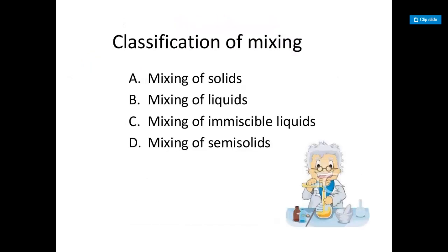Before going into the classification of mixing, I want you to know about two more terminologies. Based upon the flow properties of solids, we have two different types: cohesive materials and non-cohesive materials. Flow property means the ability of a particle, powder, or solid to flow. Based on that, we classify them as cohesive and non-cohesive materials.